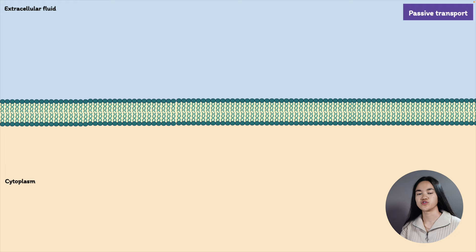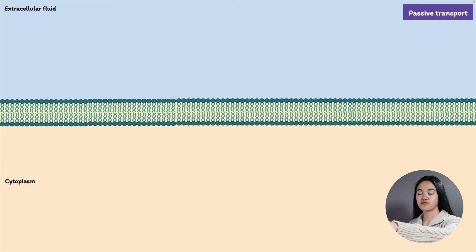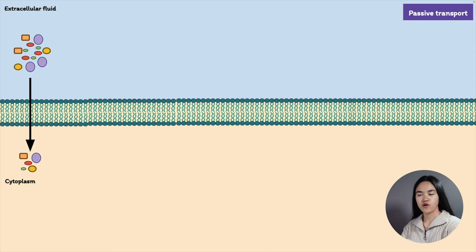There are three types of passive transport: diffusion, facilitated diffusion, and osmosis. It doesn't require the cell to exert any of its energy. What happens in passive transport is that substances move from an area of higher concentration to an area of lower concentration. This is referred to as a concentration gradient — a space or region that has a range of concentrations of a single substance.